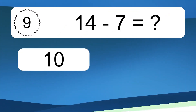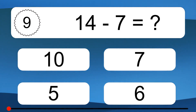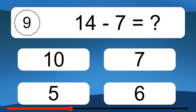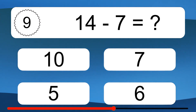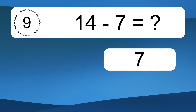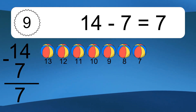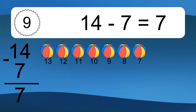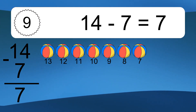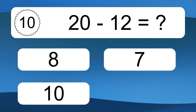14 minus 7 equals what? 14 minus 7 equals 7. Let's count it: 13, 12, 11, 10, 9, 8, 7.